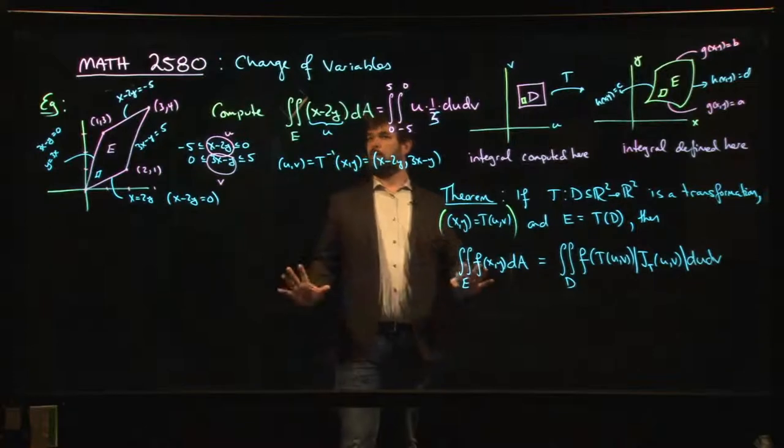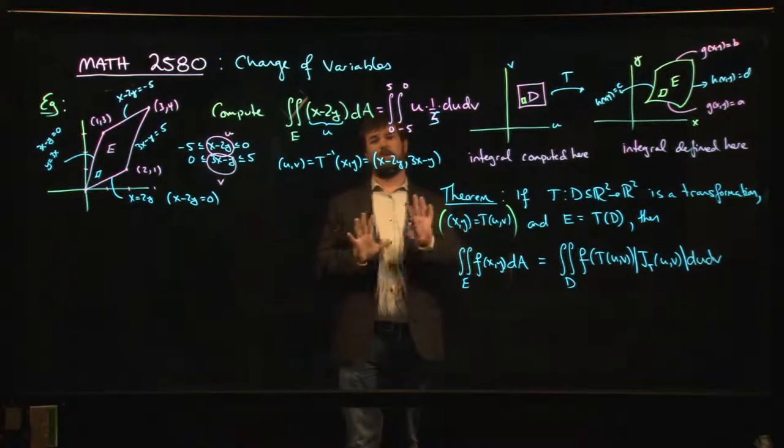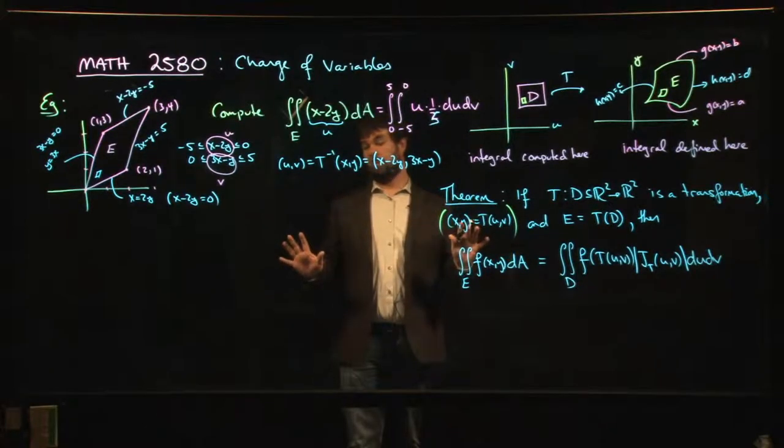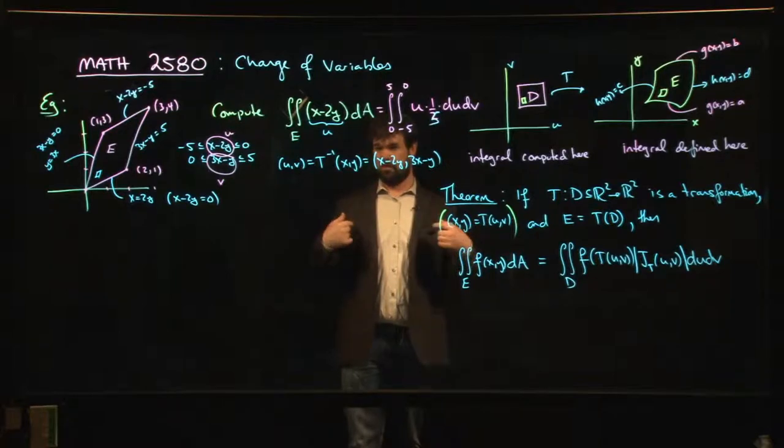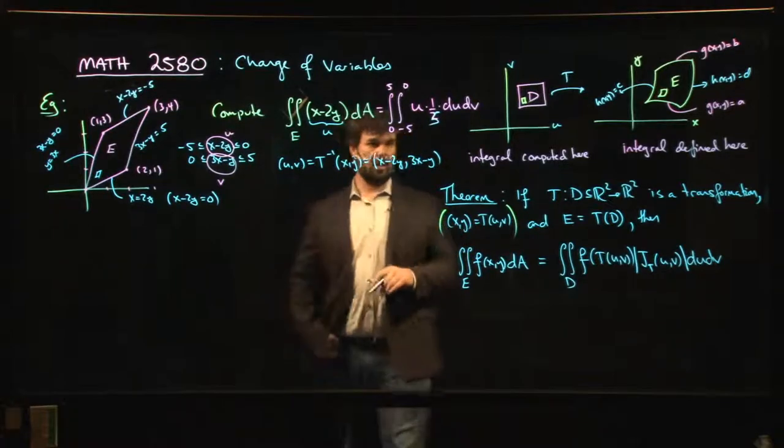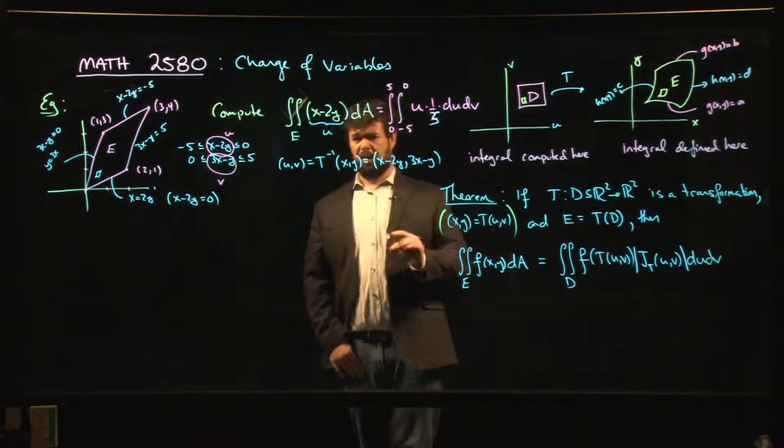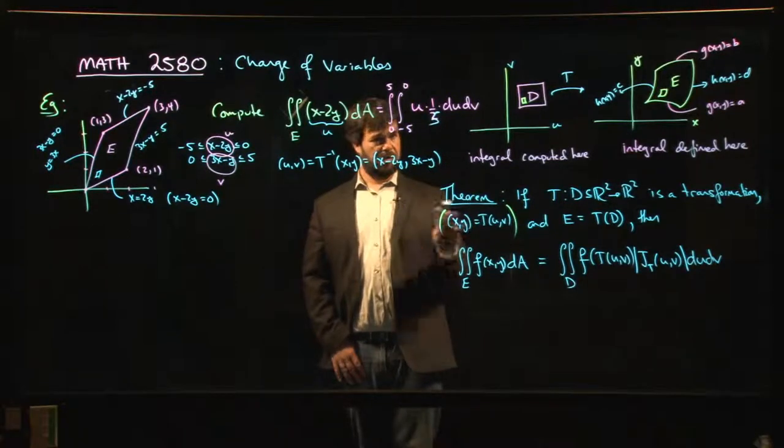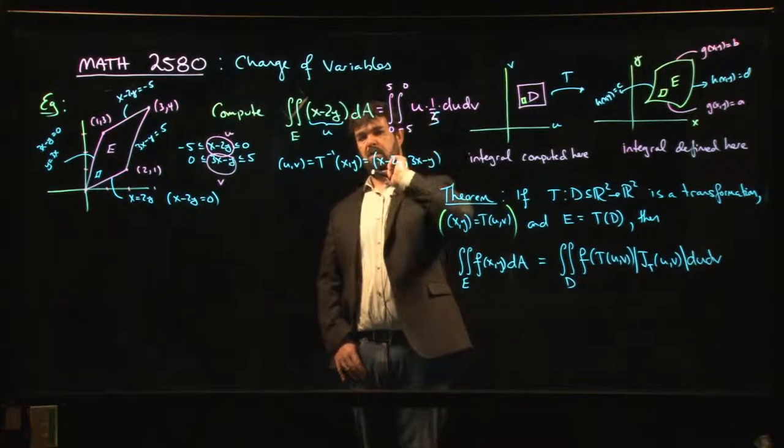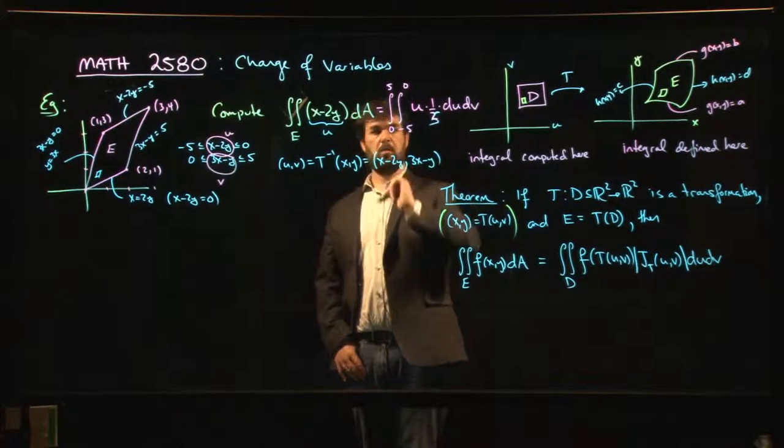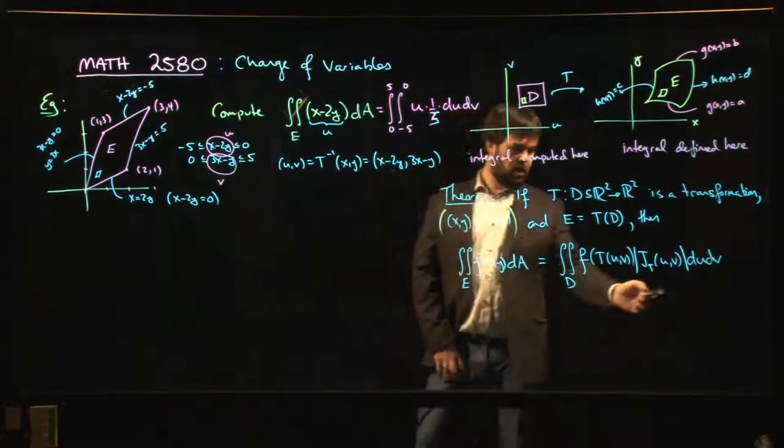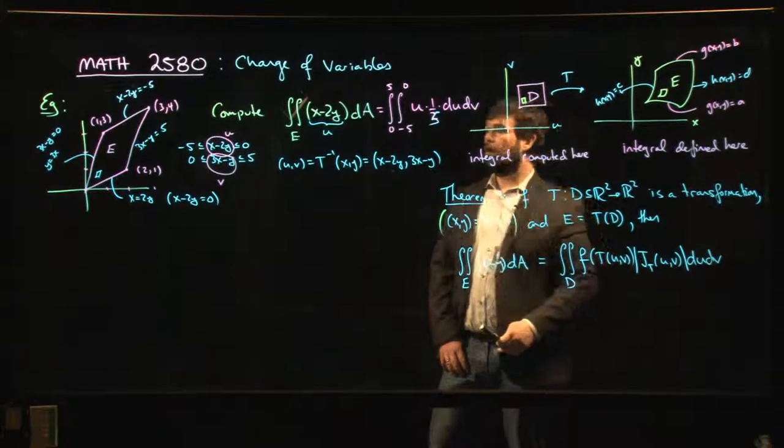All right, so we've been working through this example. In fact, we had some hiccups along the way. I made a mistake, an arithmetic error - forgot to multiply by 2, really embarrassing. Anyway, we sorted it out. We got the right Jacobian, 1 over 5 as it turns out was the value of the Jacobian.